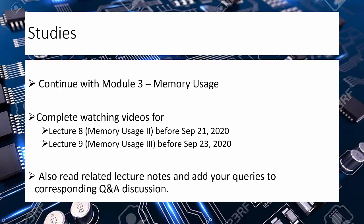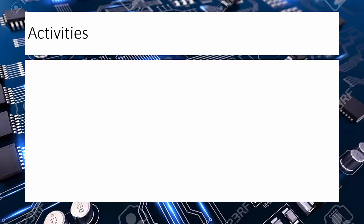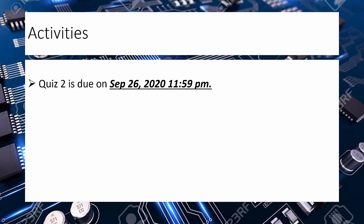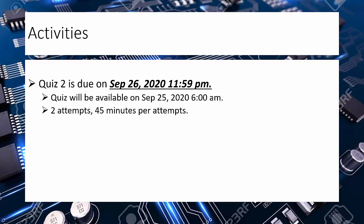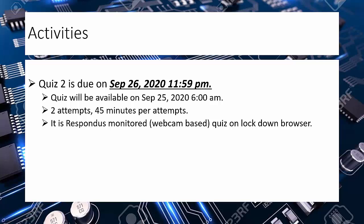You need to read all the related lecture notes and add your queries to the corresponding Q&A section. Quiz 2 is upcoming, due on September 26 by 11:59 p.m. It will be available one day before, on September 25 from 6 a.m. You have two attempts, 45 minutes per attempt. It is Respondus monitored with lockdown browser and covers lectures 6 through 9.